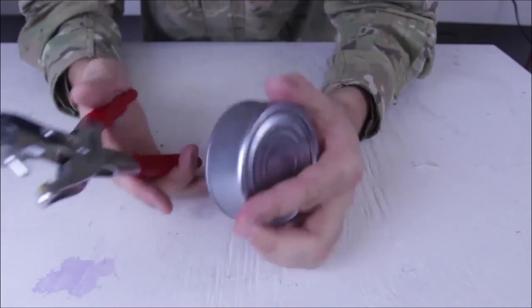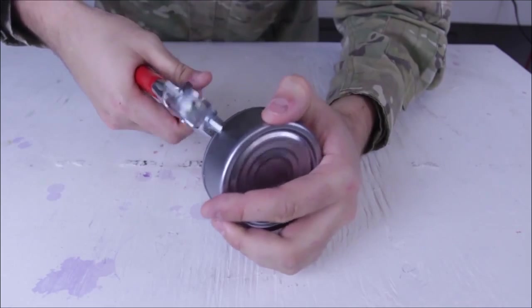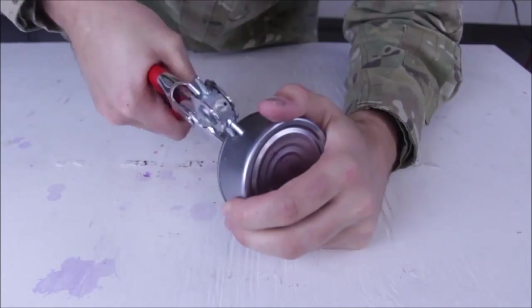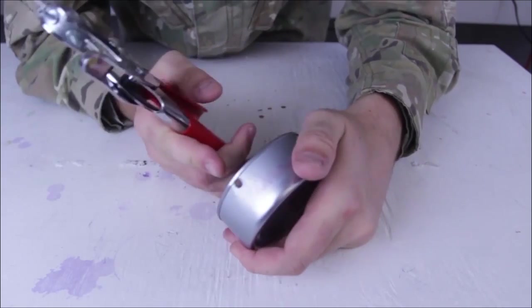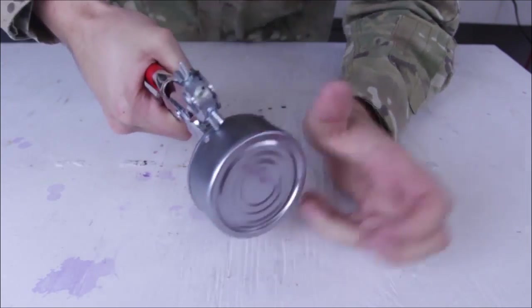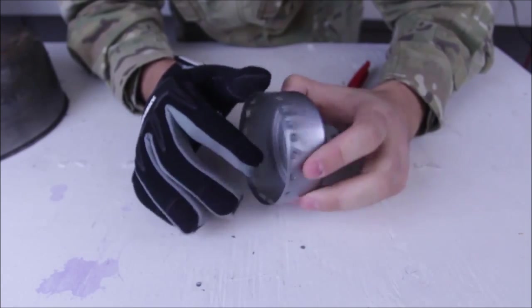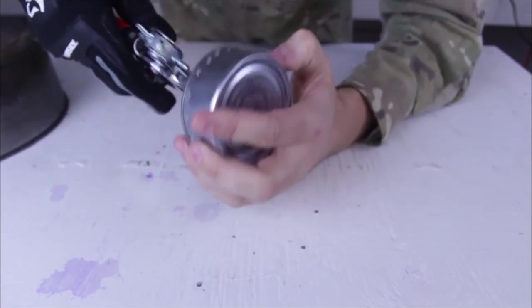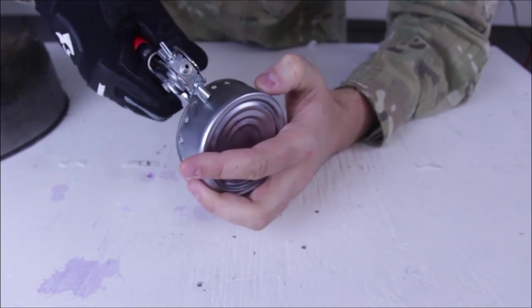So I got here an empty tuna can. And what I'm gonna do is right on the rim of it, just gonna punch a hole. Just like that. And I'm gonna keep going around it with bunch of more holes. So we punch a hole all the way around. Now we're gonna punch some more holes, but a little bit lower. Just like this, right under it.